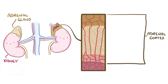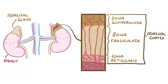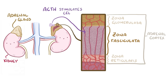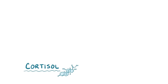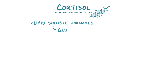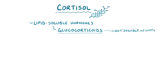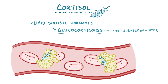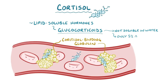The adrenal cortex is the outer part of the adrenal gland and is subdivided into three layers: the zona glomerulosa, the zona fasciculata, and the zona reticularis. The zona fasciculata is the middle and widest zone, taking up the majority of the volume of the whole adrenal gland. ACTH specifically stimulates cells in this zone to secrete cortisol, which belongs to a class of steroids called glucocorticoids. Glucocorticoids are not soluble in water, so most cortisol in the blood is bound to a special carrier protein called cortisol-binding globulin, and only about 5% is unbound, or free.